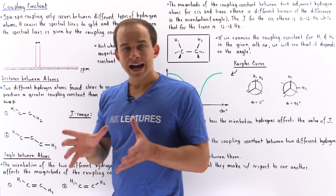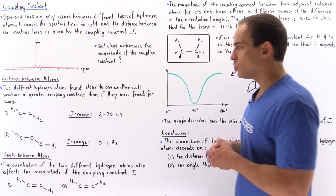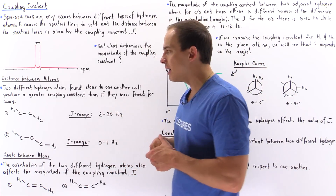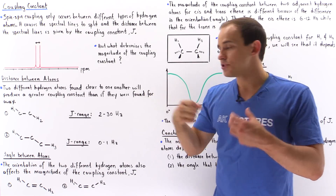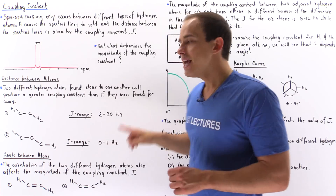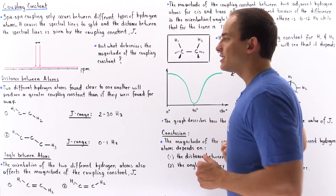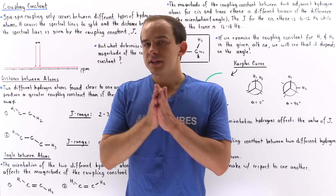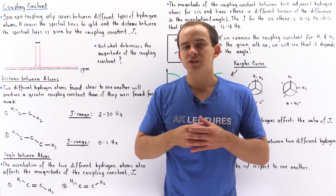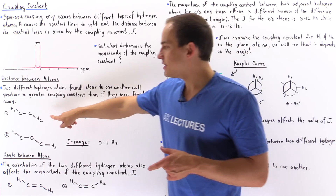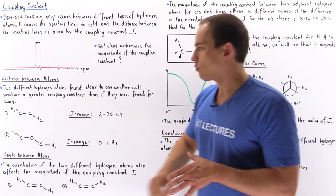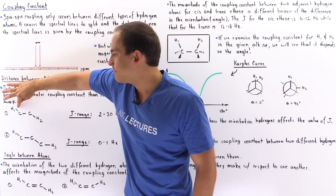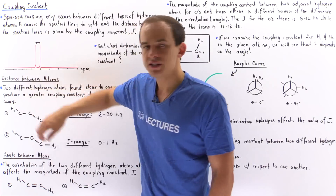We'll begin by discussing how the separation distance between two different hydrogen atoms on the same molecule affects the magnitude of the coupling constant J. If those two different hydrogen atoms are found closer to one another on that molecule, that will produce a greater coupling constant. On molecule 1, the separation distance between H1 and H2 is given by three sigma bonds — one, two, three sigma bonds.